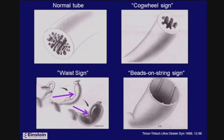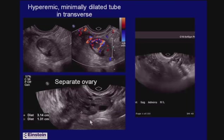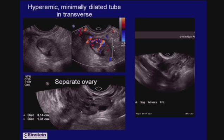When the tube is normal, as it becomes obstructed the tube dilates and folds back on itself — sort of like a sausage — and the incomplete septi or waist sign becomes apparent.